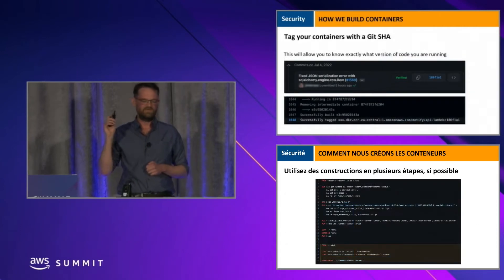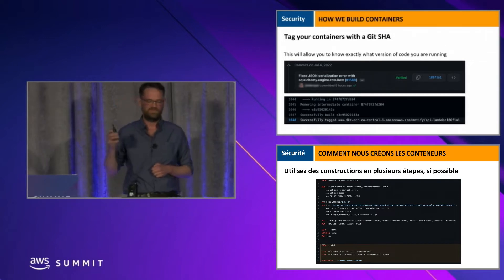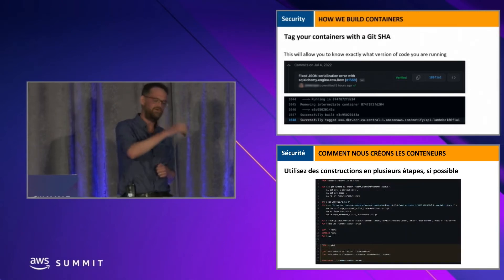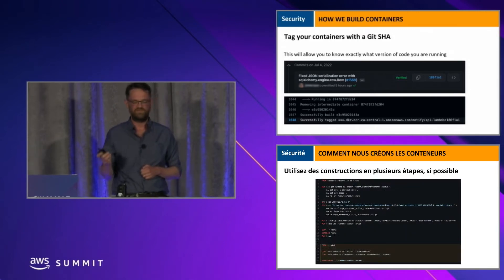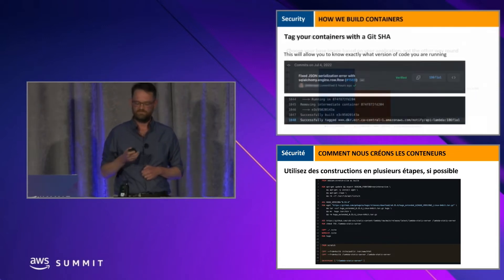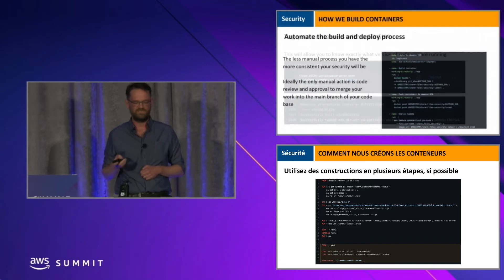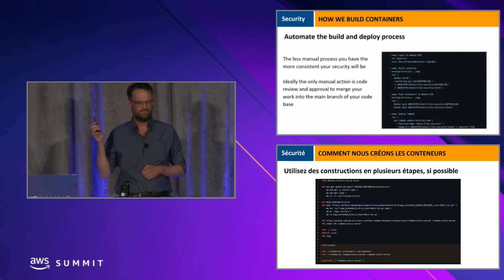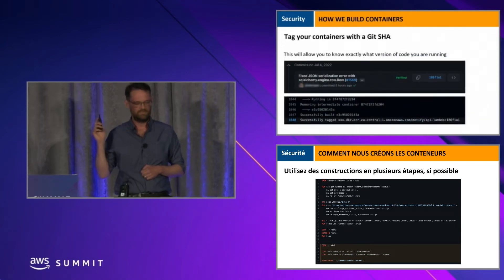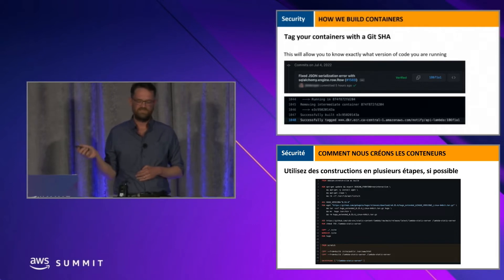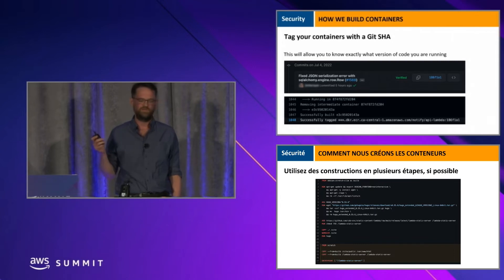This means you can easily cross-reference what code is running in production to what we expect to be running. Even more important: assuming something went wrong, we can very easily roll back to a previous version of the code. If your latest release introduced a security vulnerability, this will allow you to quickly revert back to a version where you didn't have that vulnerability.